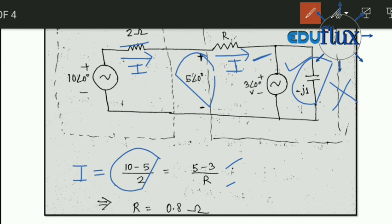Now just by this equation we can find R. 10 minus 5 by 2, that is 2.5, and 5 minus 3 by R. So I can say 2.5 is equal to 2 by R, so by solving, R is equal to 2 by 2.5, that is 0.8 ohm.